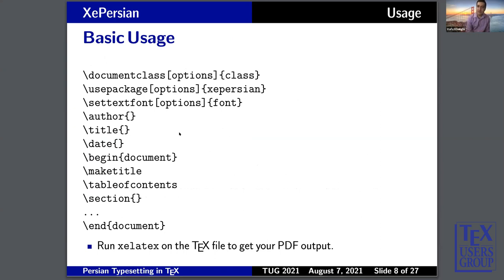The basic usage of the package is quite easy. You just load a LaTeX document as usual. The only difference is that you load the package Z-Persian with its options, which are optional. The only compulsory control sequence is set text font, which allows you to use a font for the main Persian text. To get a PDF, you run XeLaTeX on the text file and you get your PDF.